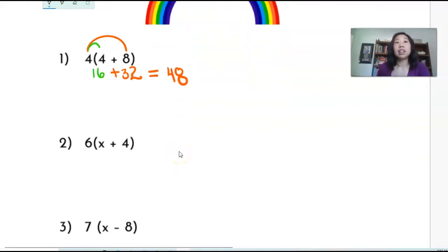Now, I'm going to do the same thing, even if I have variables, right? So I'm going to rainbow the outside number with each number on the inside. So I have six times x is 6x.